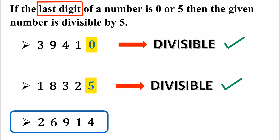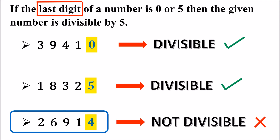Is this number divisible by 5? Look at the last digit of this number. It is 4. If the last digit of any number is other than 0 or 5, then the number is not divisible by 5. So, the number is not divisible by 5.